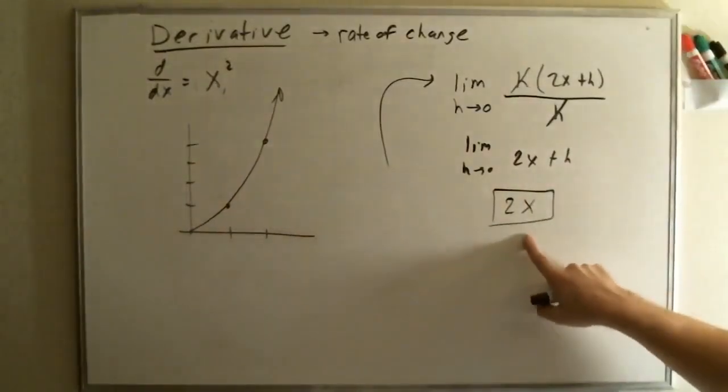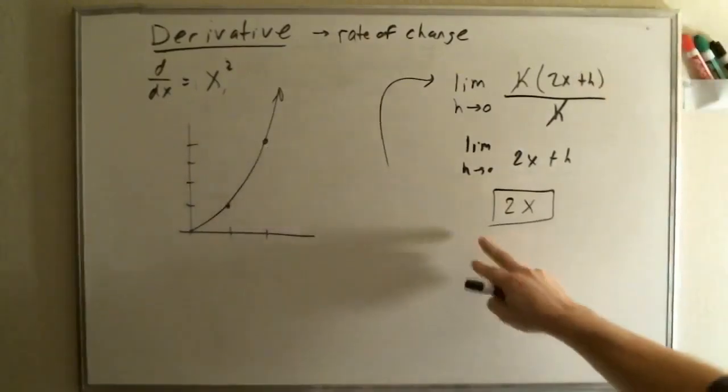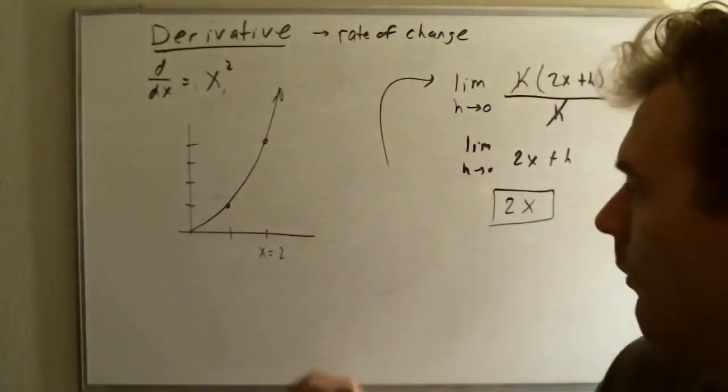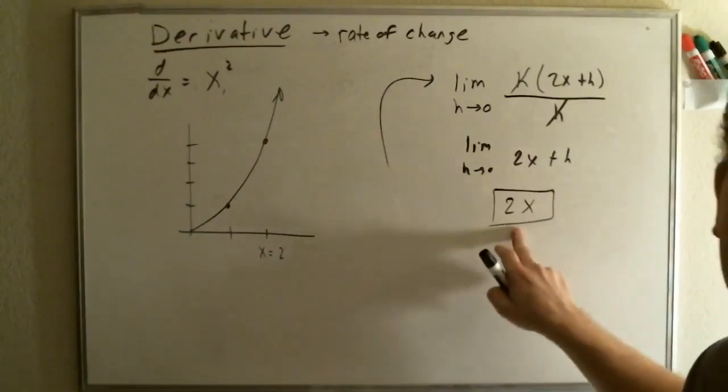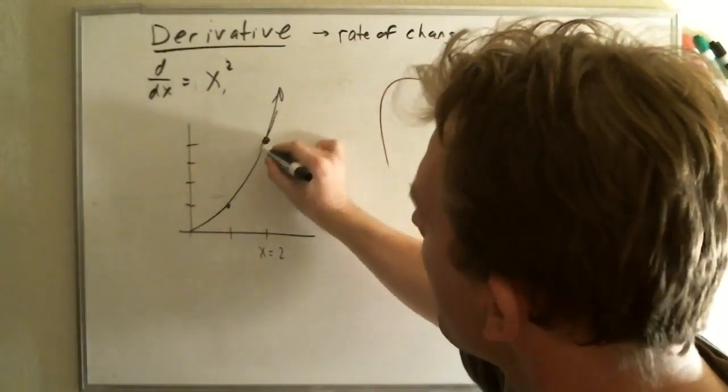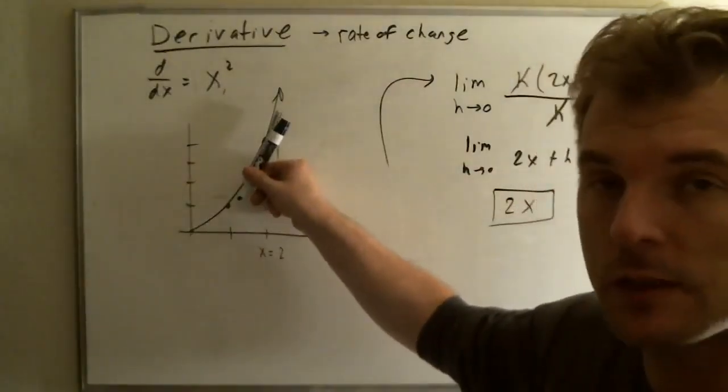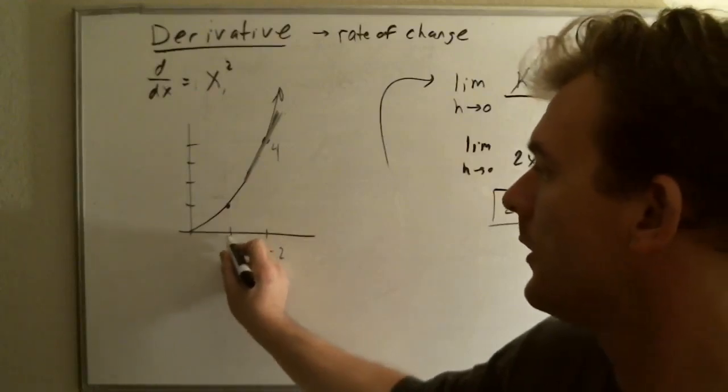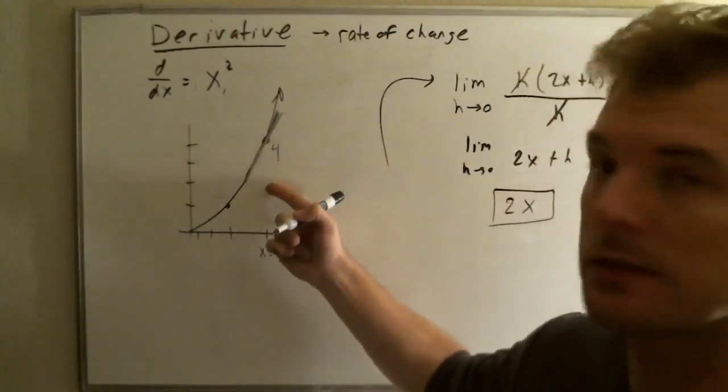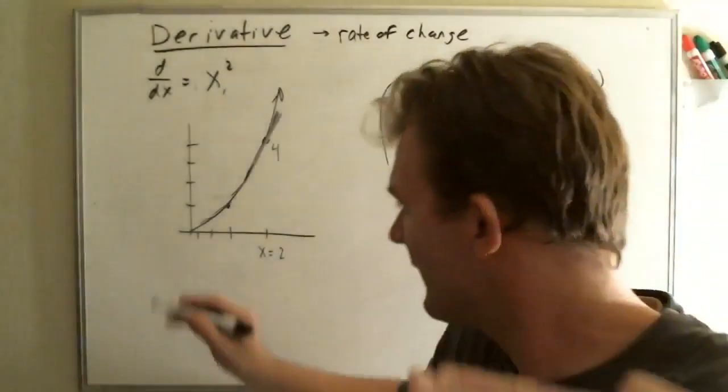But, it says that 2x. Well, what is 2x? 2x is a slope, a positive. So, what if we wanted to say, what if we plug in x equals 2? That's going to be 2 times 2 is 4. So, you're going to say, at this point, the slope is 4. So, that's a pretty good slope. So, what happens if we keep going towards 0? Well, pretty soon, if we keep going towards 0, what happens to our slope? It's going to get smaller, smaller, and smaller, and less, and less, and less, until it reaches 0.